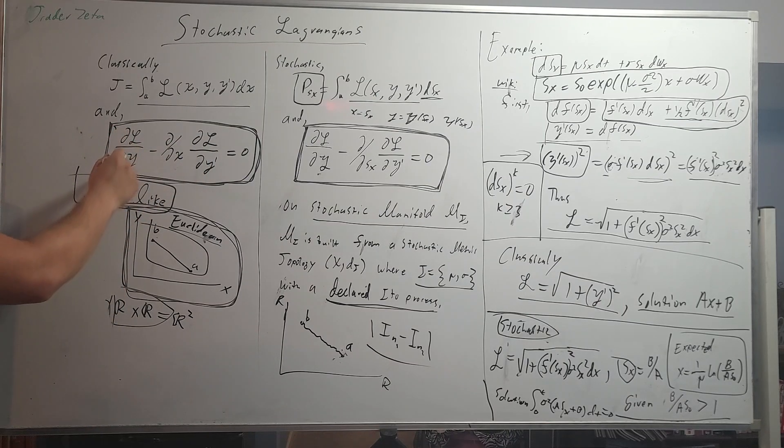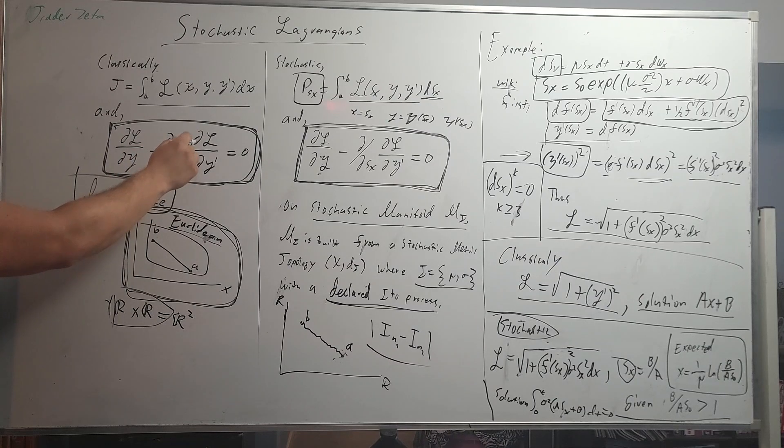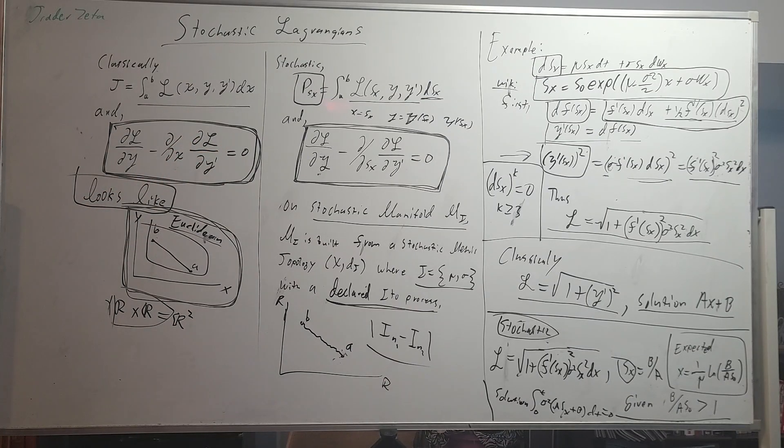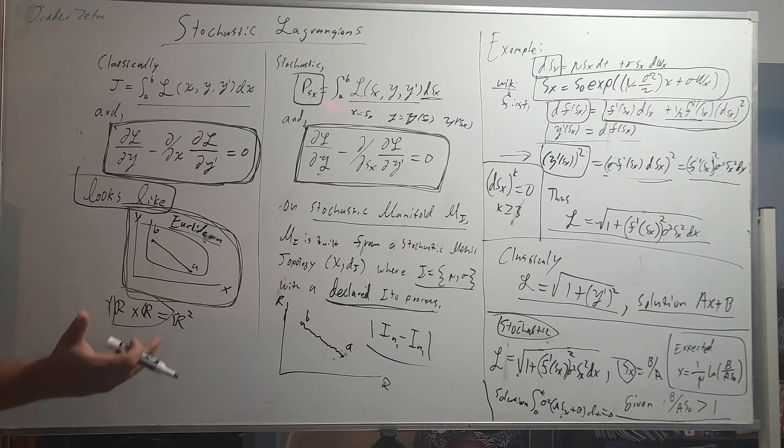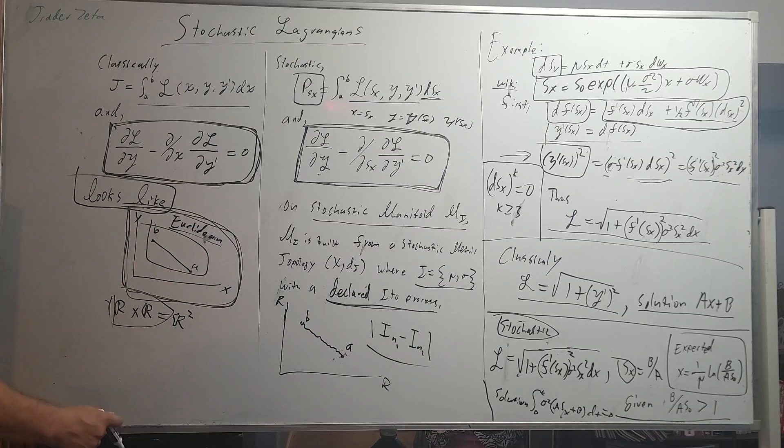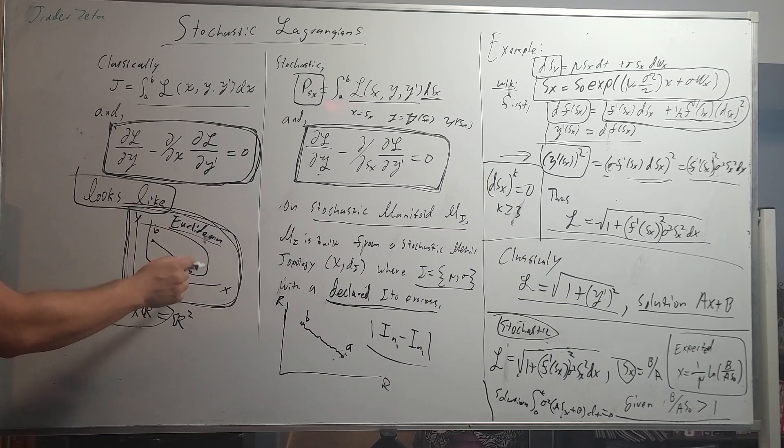And this Lagrangian function basically obeys the Euler-Lagrange equations. So the derivative of Lagrangian with respect to y minus dx, derivative of Lagrangian with respect to y prime equals zero. It basically means that in a space you can have the shortest distance between two points. In the Euclidean world, if you have a to b, this is a straight line in R2, and clearly the shortest distance between two points is this line.